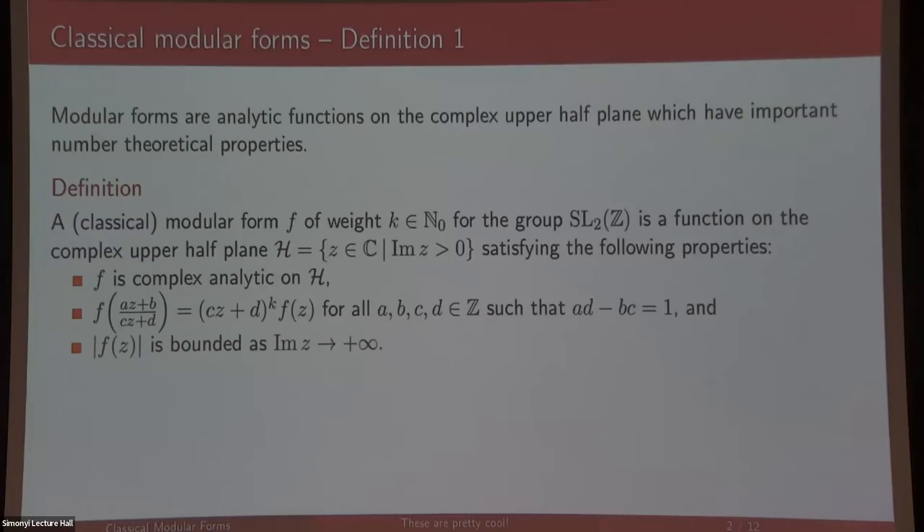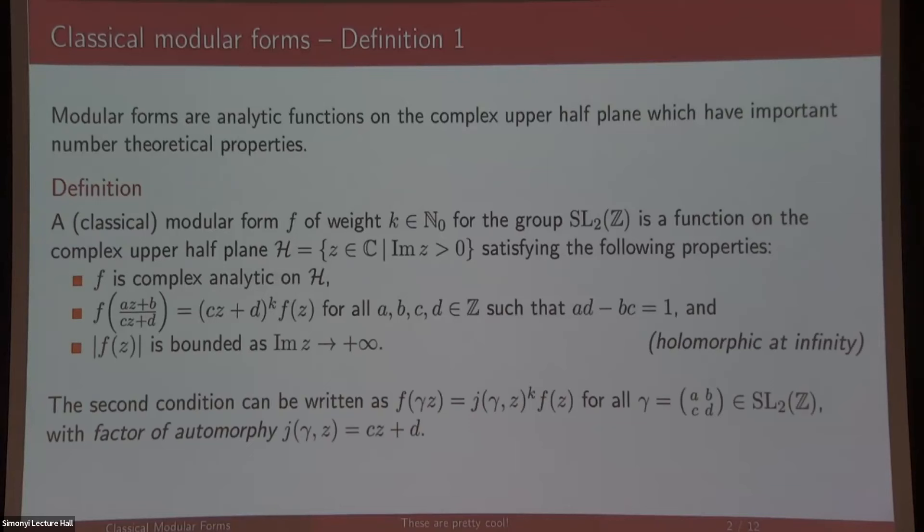The second condition can be written in a slightly different way. F of gamma acting on z, where gamma is an element of SL₂(Z), is related to f of z with this factor of automorphy. Modular forms can have different weights. Your weight can be any integer k from zero upwards, and this is the usual classical definition of a modular form at least for SL₂(Z).